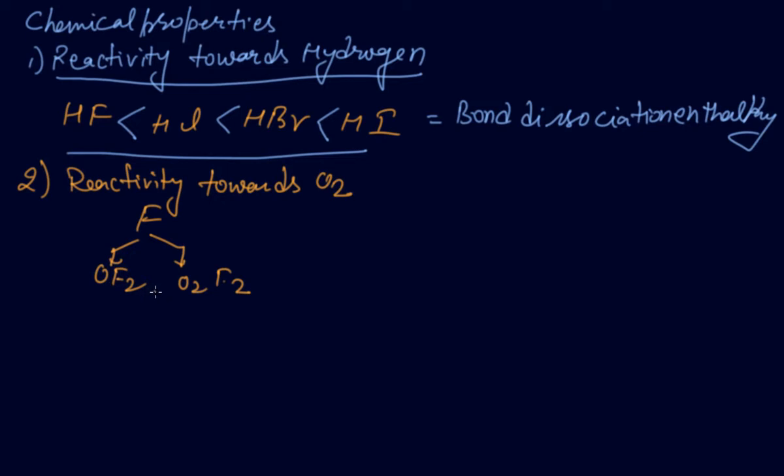These oxides are essentially oxygen fluorides due to the higher electronegativity of fluorine than oxygen. Both are strong fluorinating agents. O2F2 oxidizes plutonium to PuF6, and this reaction is used in removing plutonium as PuF6 from nuclear fuel. This is an important exam question.